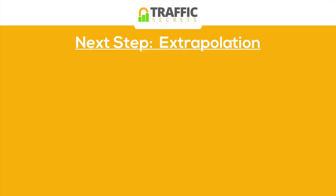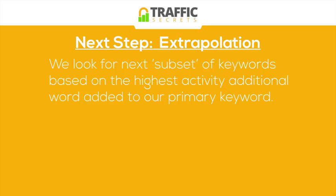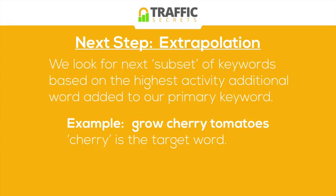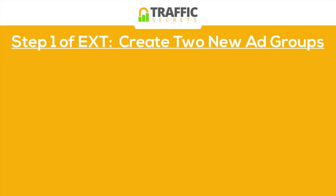The next step after collecting data is what I call extrapolation — moving forward and expanding based on adding that keyword phrase 'grow tomatoes' to the account. We look for the next subset of keywords based on the highest-activity additional word added to the primary keyword. For example, if we start seeing the word 'cherry' showing up with high activity — in phrases like 'grow cherry tomatoes,' 'grow cherry tomatoes indoors,' 'how to grow cherry tomatoes' — that becomes a target word to isolate.